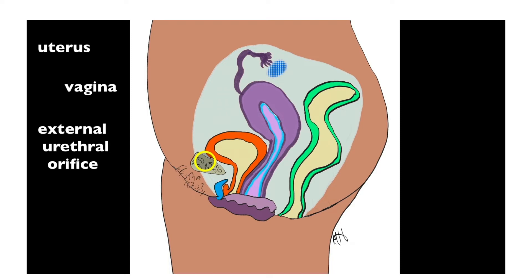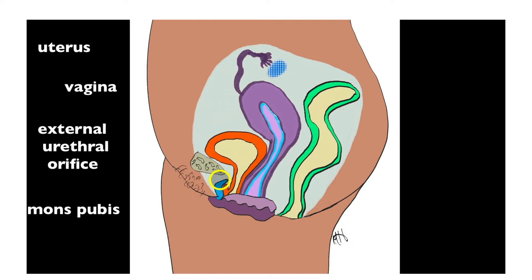This right here is part of the pelvic bone. Directly on the anterior and inferior aspect of the pelvic bone, we find skin overlaying fat with pubic hair growing out of it, and this is known as the mons pubis. We also have the clitoris right here. Bounding the vaginal orifice on both sides are the labia minora and labia majora.